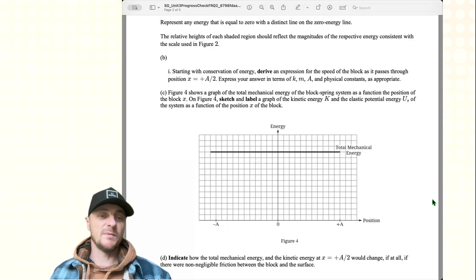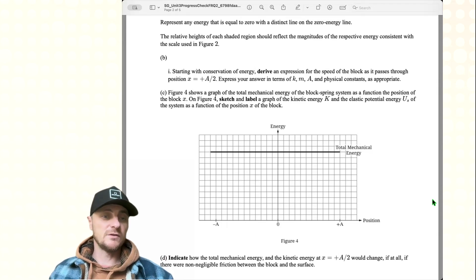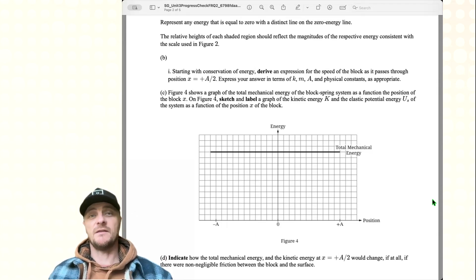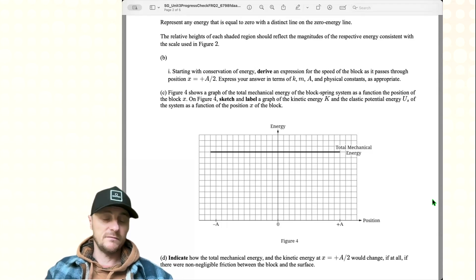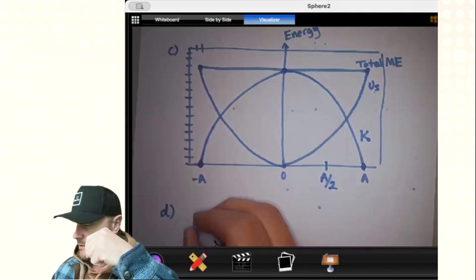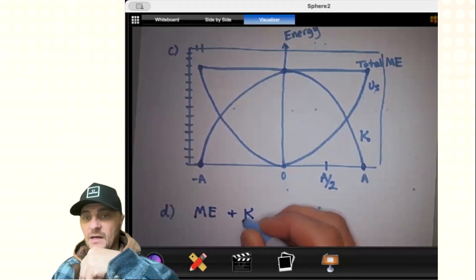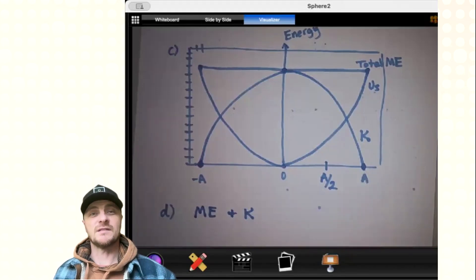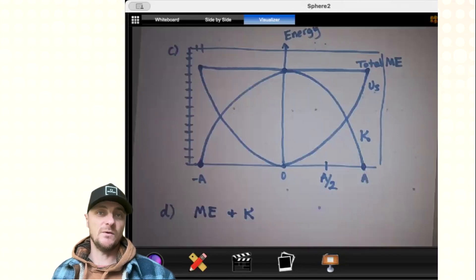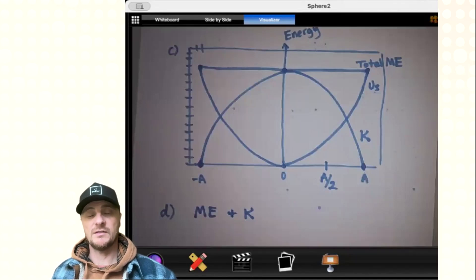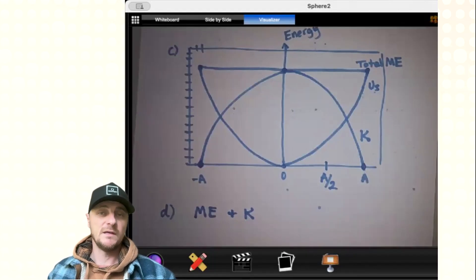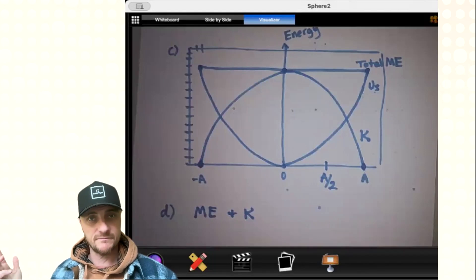Part D: Indicate how the total mechanical energy and the kinetic energy at x equals positive a divided by 2 would change, if at all, if there were non-negligible friction between the block and the surface. At a divided by 2, they want to know what's happening to the mechanical energy and the kinetic energy if there is friction in the system. If friction is acting, friction is doing work and taking mechanical energy out of the system. The total mechanical energy reduces. At a divided by 2, the spring is still at the same position as before, so the spring potential energy does not change. Therefore, kinetic energy must be the thing that reduced to agree with the total mechanical energy decreasing.